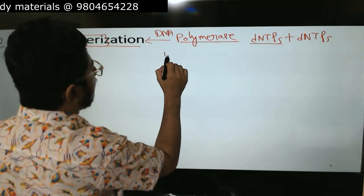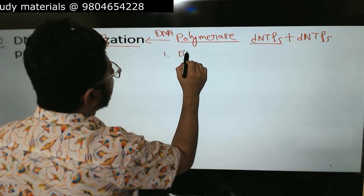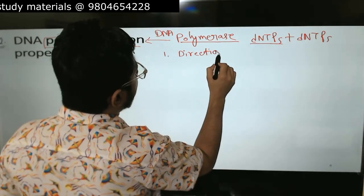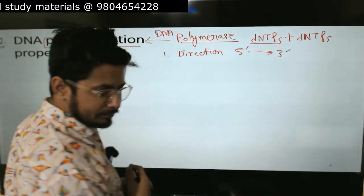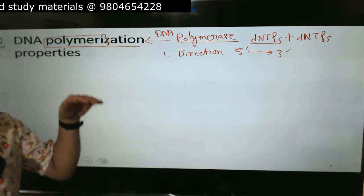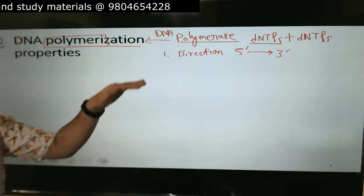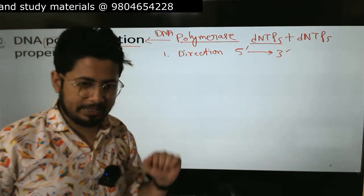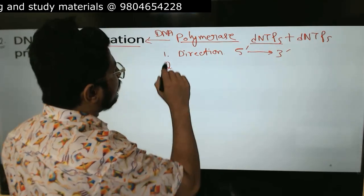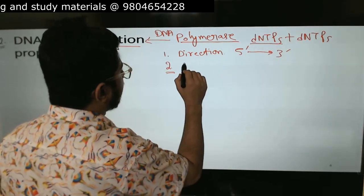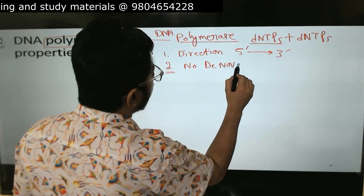This polymerase has some key features. The first feature is the direction of polymerase movement, which is the 5' to 3' direction — that is the direction of movement of the polymerase. The second important property, and a drawback of DNA polymerase, is that there is no de novo synthesis.